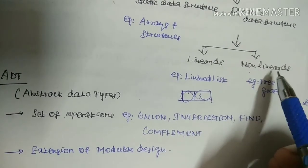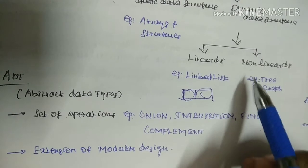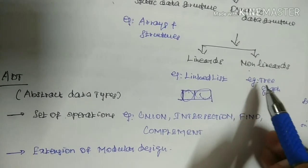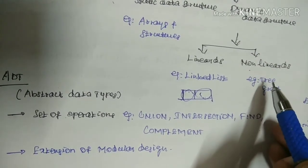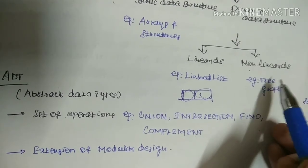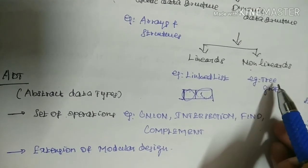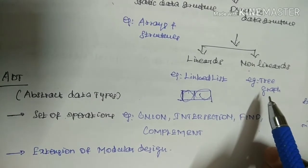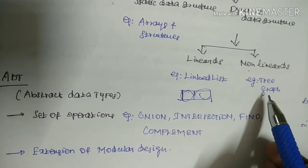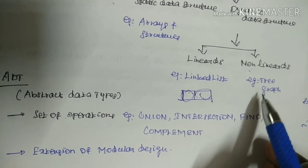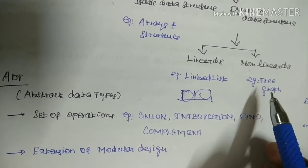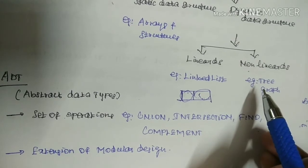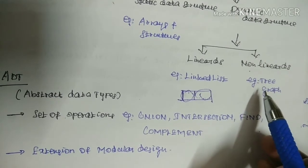Next is Non-Linear Data Structure. Examples are Tree and Graph. The Tree is used to store data in the form of a hierarchical structure. Graph is used to store data in graphical form. Both Tree and Graph have nodes and edges.